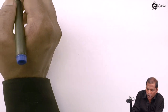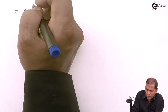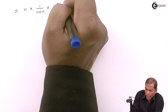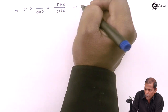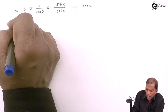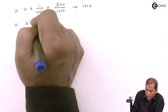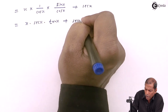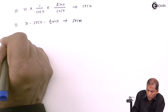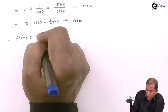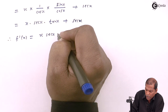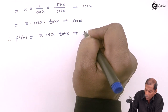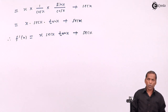So the next step: we write x times 1/cos(x), which is sec(x), times sin(x)/cos(x), which is tan(x), plus sec(x). In this way we get f'(x) = x·sec(x)·tan(x) + sec(x). This is the required solution for the given problem. Thank you.